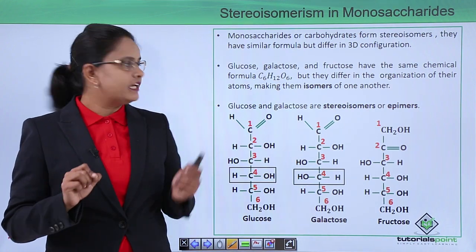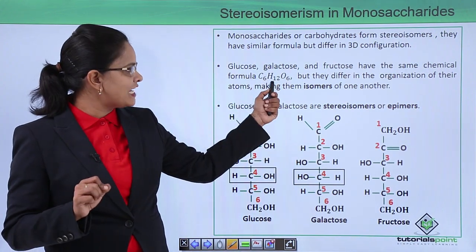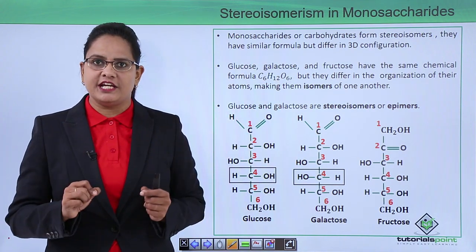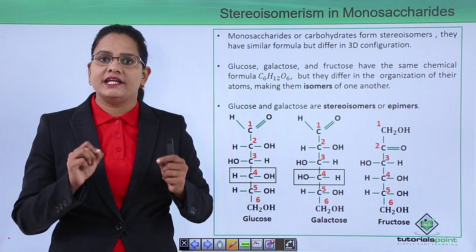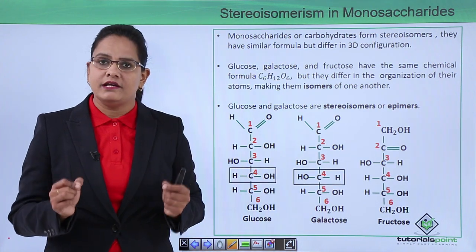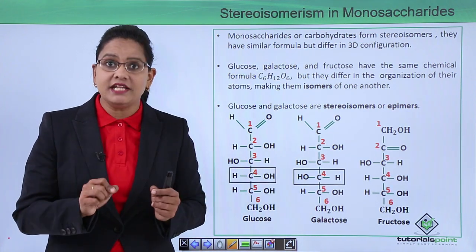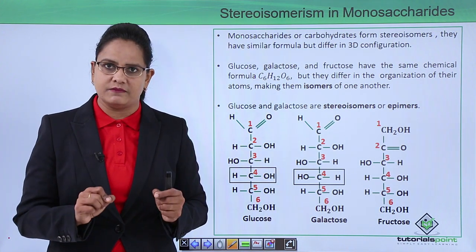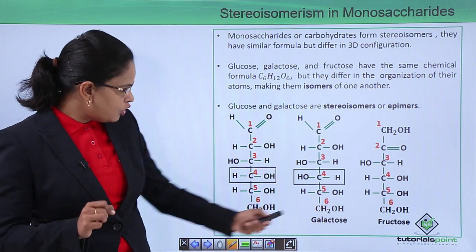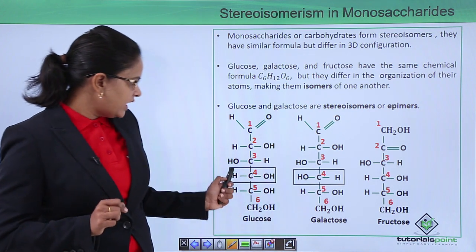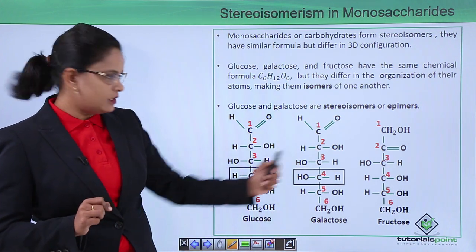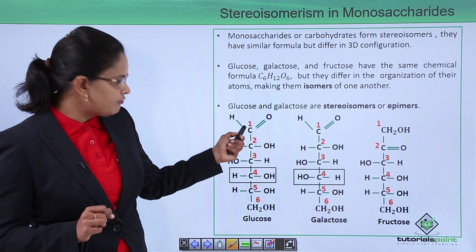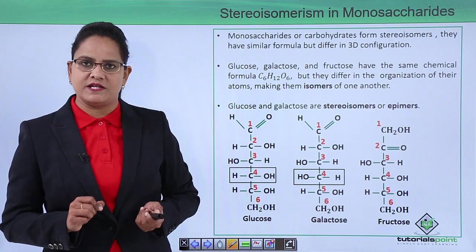All of them have a chemical formula of C6H12O6, but when we see their spatial arrangements, we find that they are different, and it is because of these minor differences that there is a major difference in their chemical reactions. In fructose, a carbonyl group is present at the second position, whereas in glucose the aldehydic group is present at the first position.